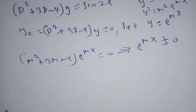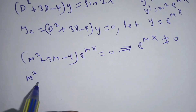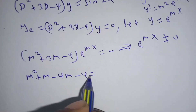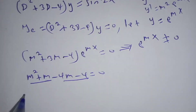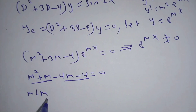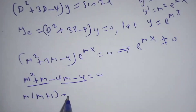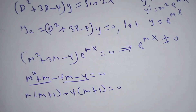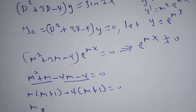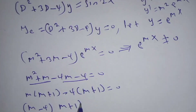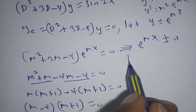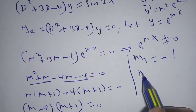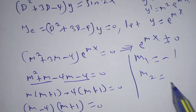The quadratic m squared plus 3m minus 4 equals zero can be written as m squared plus m minus 4m minus 4 equals zero. Factoring the first two terms gives m(m+1), and factoring the last two gives -4(m+1), so (m-4)(m+1) equals zero. Therefore m1 equals negative 1 and m2 equals 4.